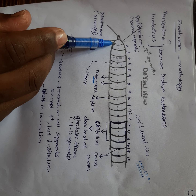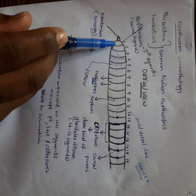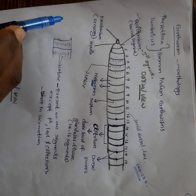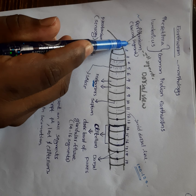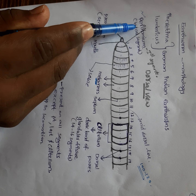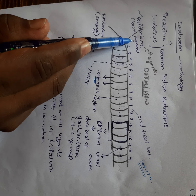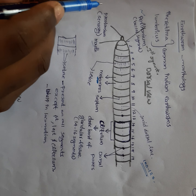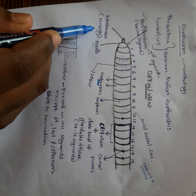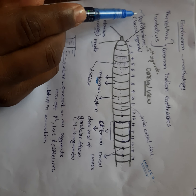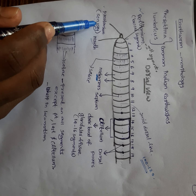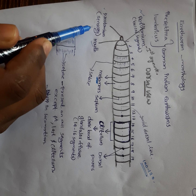The first compartment, or first segment, or first metamer is called peristomium, also known as the buccal segment. The mouth will open into the first segment, that is the peristomium or buccal segment. Another important structure is prostomium. Prostomium is not a compartment — it is a sensory part, not a compartment.